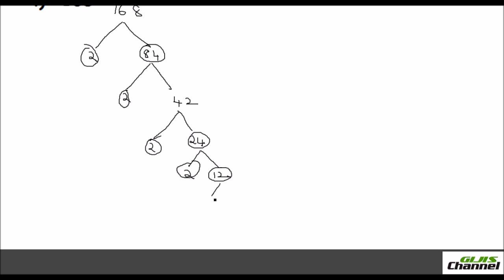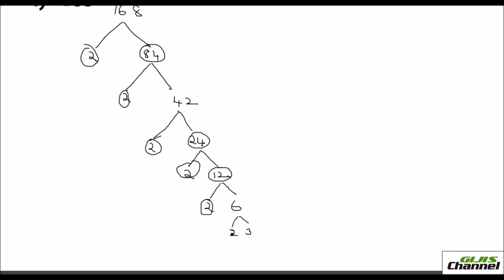24 we can split. It is 2 times 12. Again this 12 when you split, it is 2 times 6. And the 6 you can finally split to 2 times 3. So these are the prime factors. For 168 the numbers are like this.